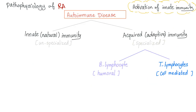Pathophysiology of rheumatoid arthritis — it's an autoimmune disease. We have two types of immunity: innate (natural) immunity, which is unspecialized, and acquired (adaptive) immunity, which is specialized and superior.